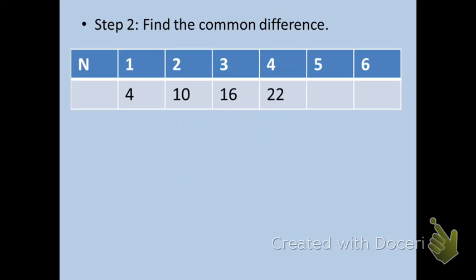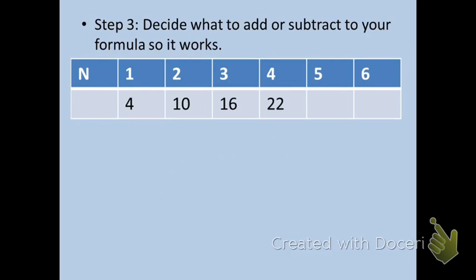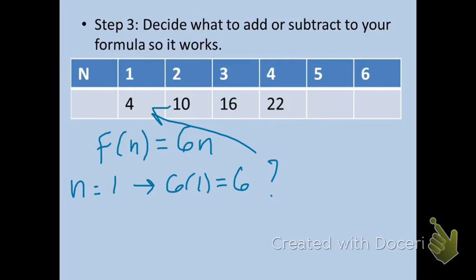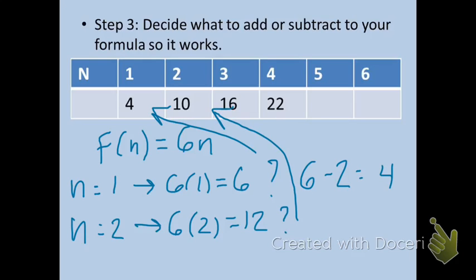The next step in writing a formula for the nth term is to figure out what you need to add or subtract to your formula so that it works. For example, right now our formula is f(n) equals 6 times n. In the first term, when n equals 1, we get that 6 times 1 is equal to 6. What do we need to add or subtract to 6 to get that first term? We could just subtract 2 to get to 4. Right now, we have 6 times 1 minus 2 is 4. In the next term, the second term, where n equals 2, we have 6 times 2, and that's going to give us 12. What do we have to subtract from 12 to get to the next term, right here, 10? That would be 2 again. So, 12 minus 2 is 10.